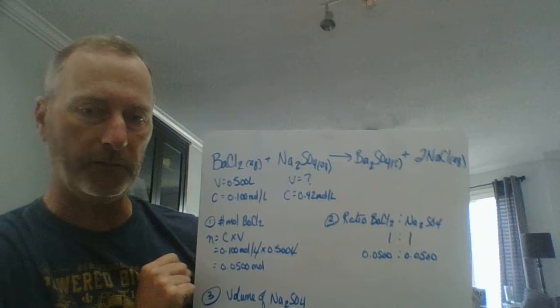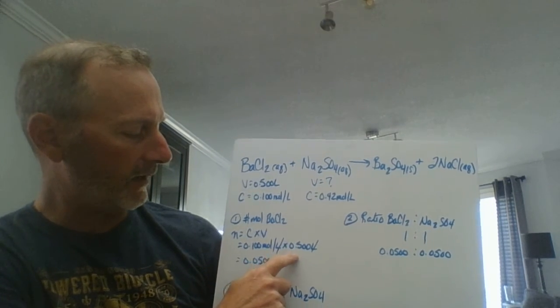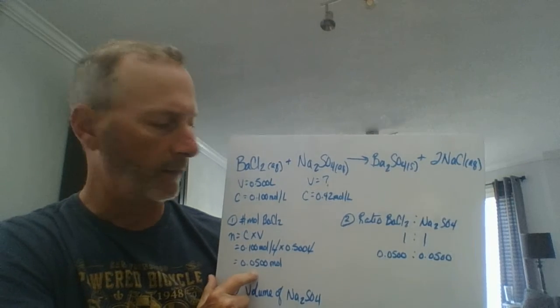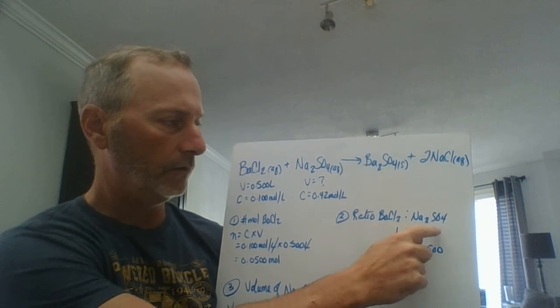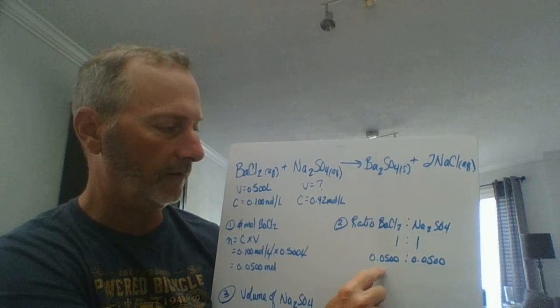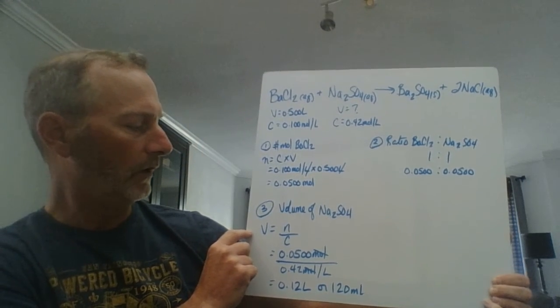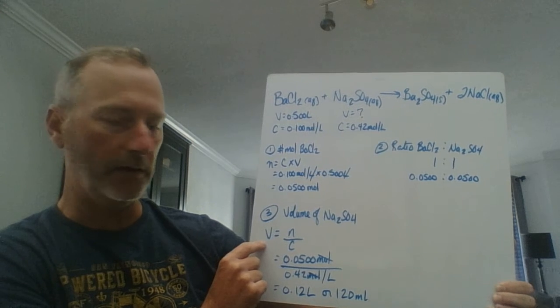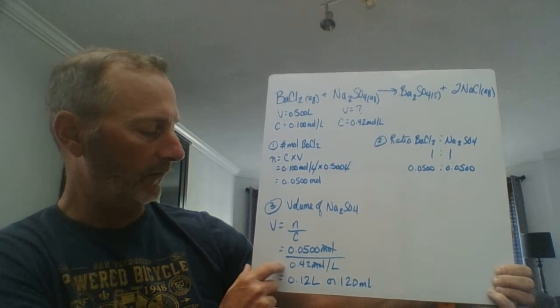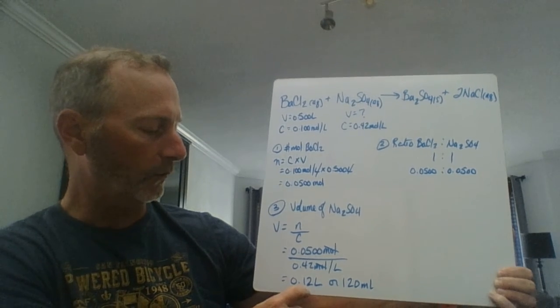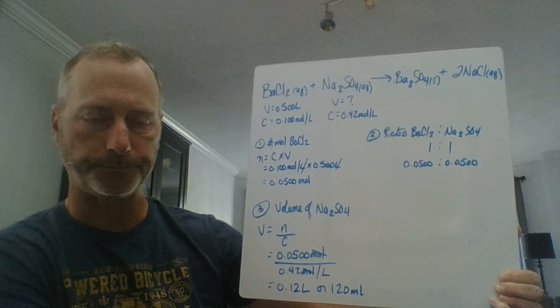Number of moles of barium chloride: n = C × V = 0.1 × 0.5 = 0.05 moles. The ratio of BaCl₂ to Na₂SO₄ is 1:1, so we also have 0.05 moles of Na₂SO₄. Now rearranging V = n/C: 0.05 moles divided by 0.42 moles per liter gives 0.12 liters, or 120 milliliters. A lot of times they'll ask for the answer back in milliliters, so make sure you do that conversion if the question asks for it.